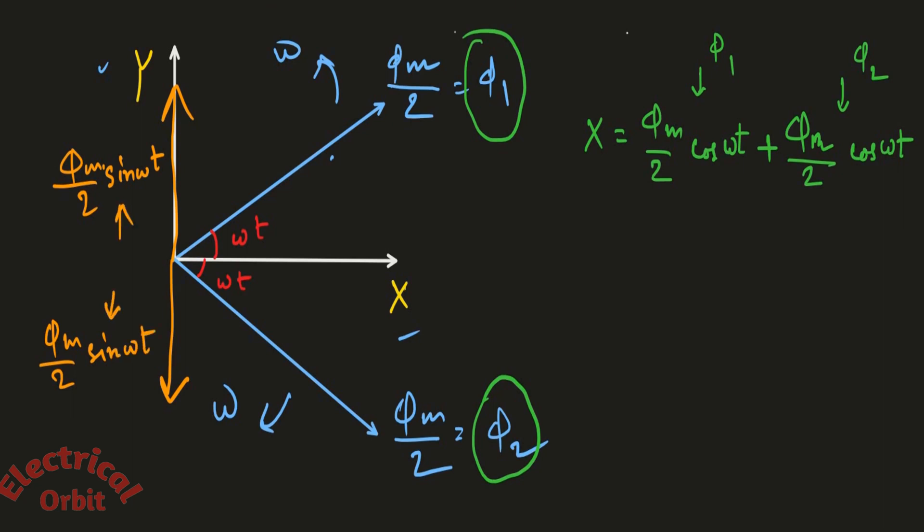So if we write the y component, then we will get Φ_M/2 sin(ωt) minus Φ_M/2 sin(ωt). So finally what are we getting? For the x-axis we are getting the total x-axis component is equal to Φ_M cos(ωt) from this equation, and for the total y-axis component we are getting 0, because both of these values are canceling each other.